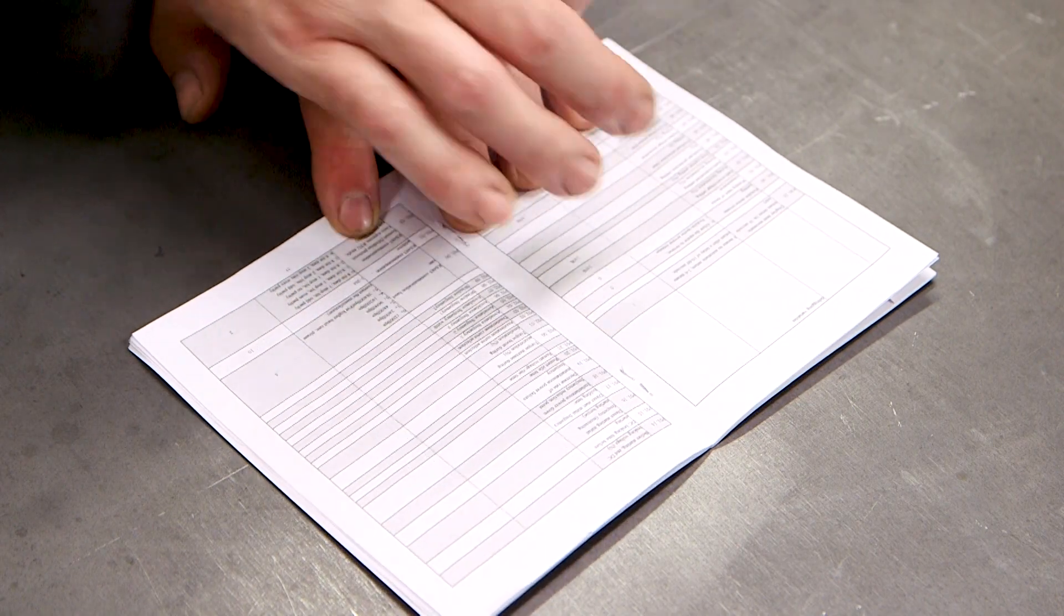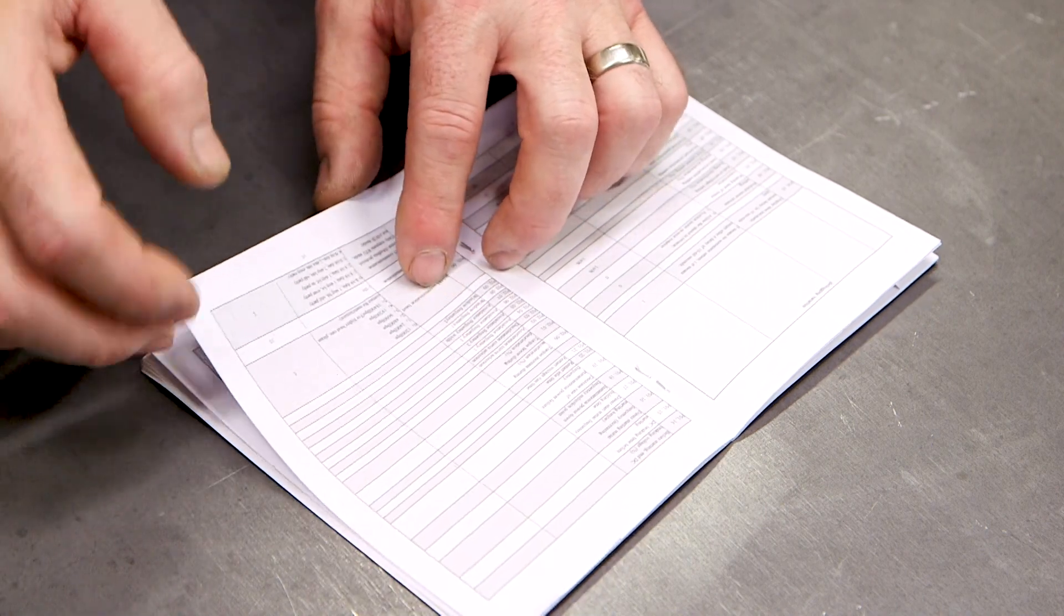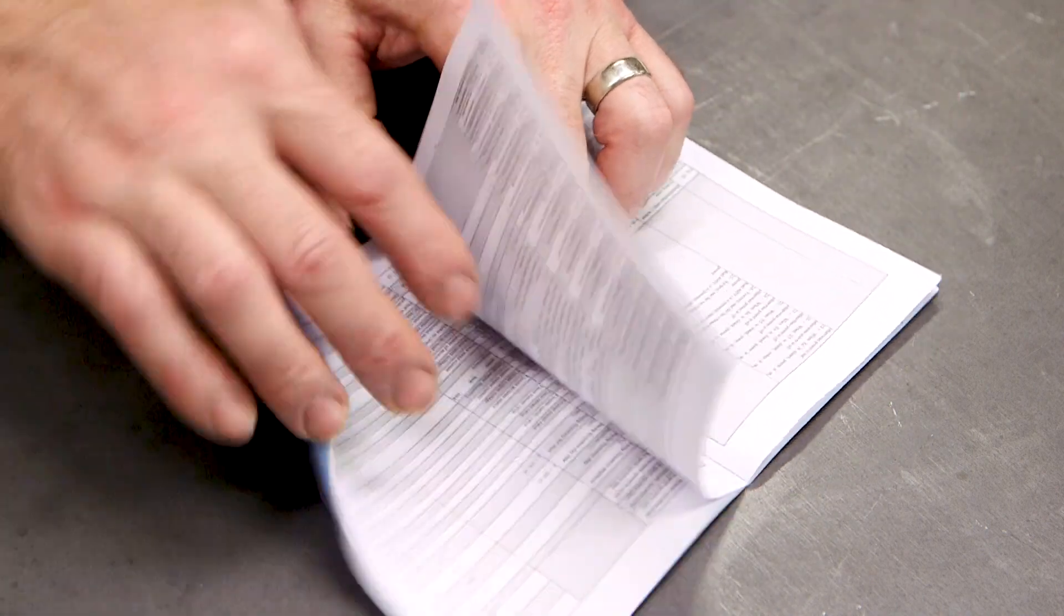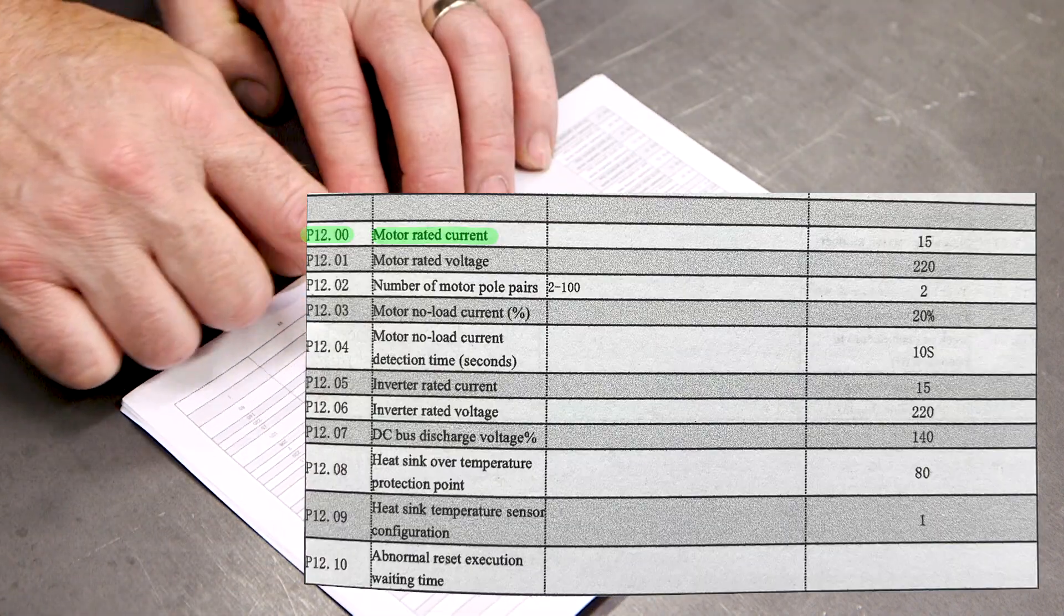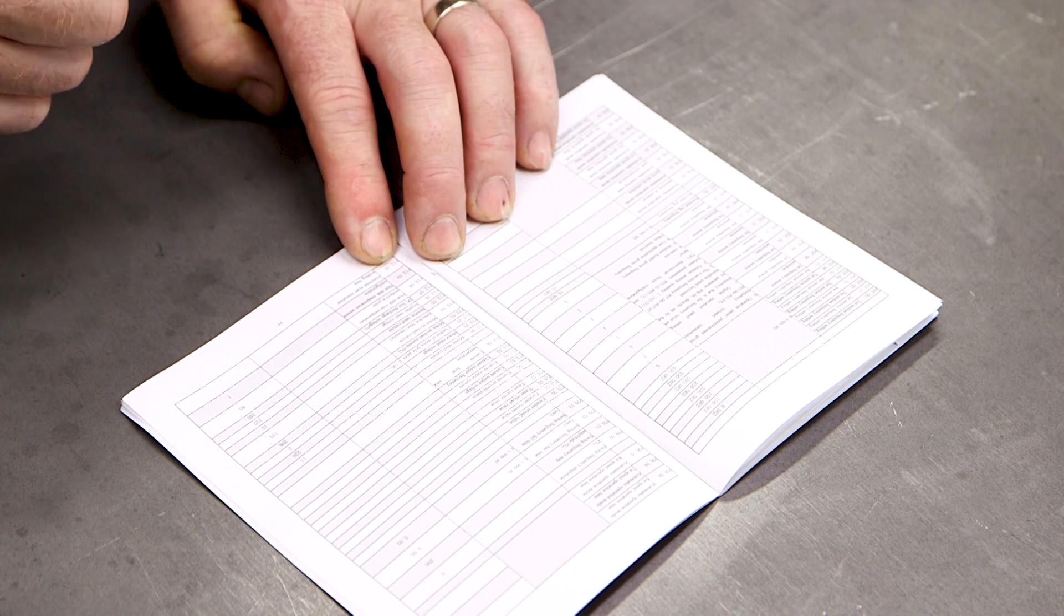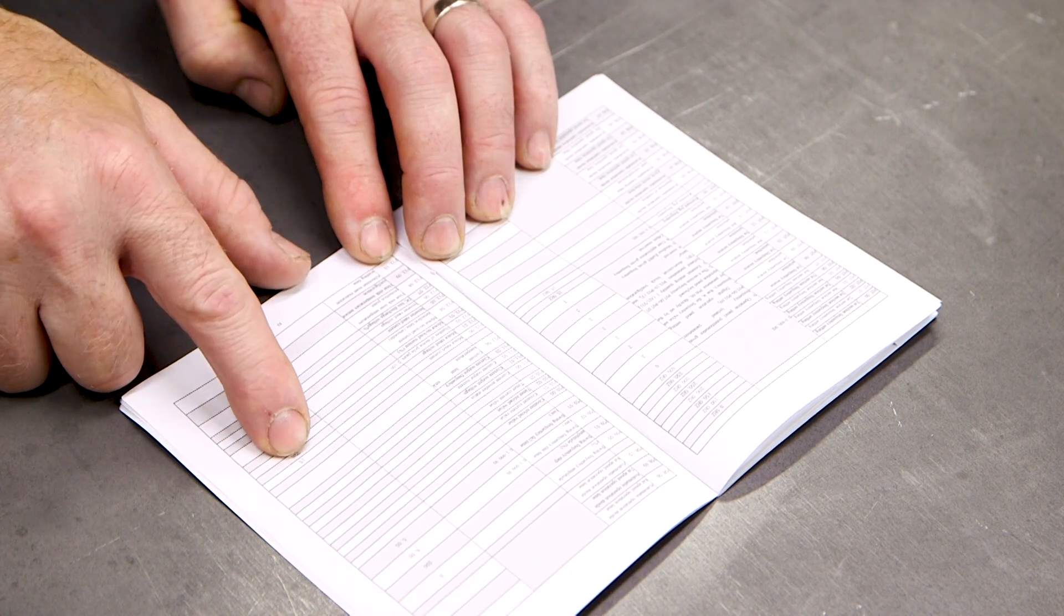One thing they don't mention in that simple startup table is the actual motor configuration. And on this VFD, that's in the 12 series parameter codes. So P1200, that's the motor rated current. This is set at 15. I pulled that off the nameplate of my motor. It was only 2.8.